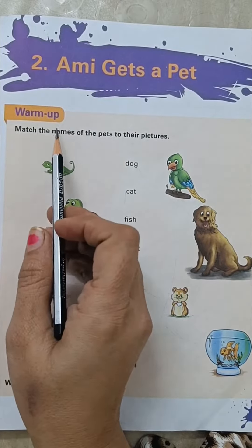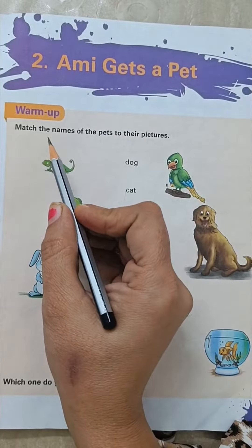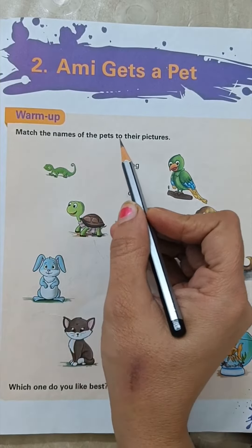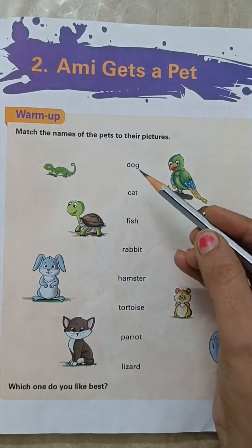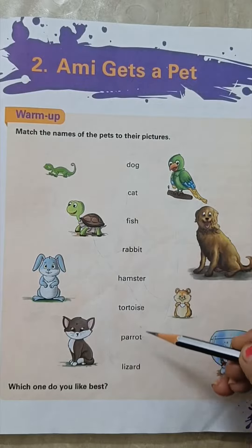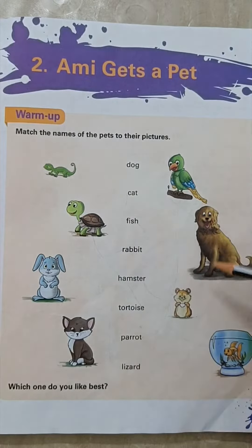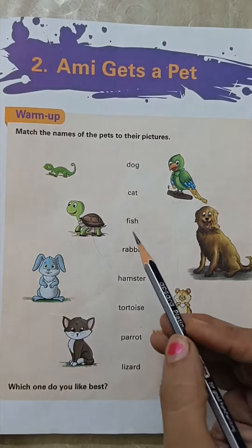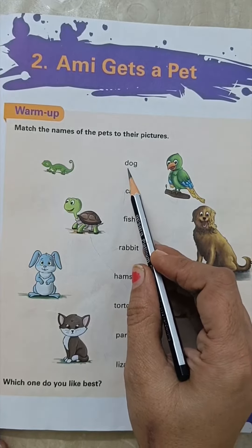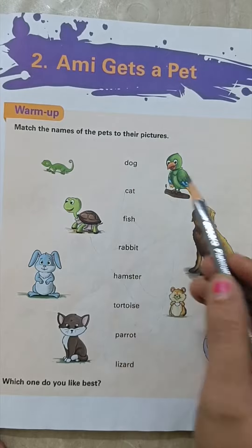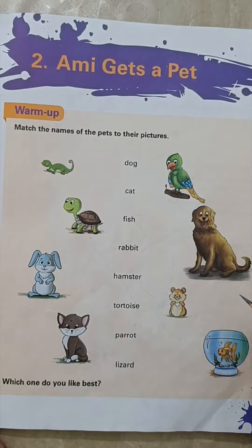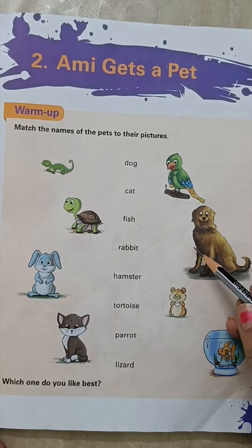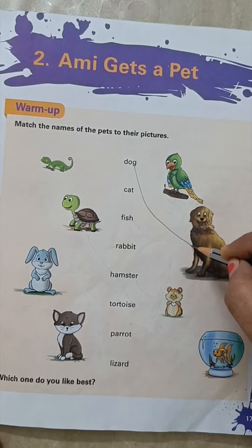Now for a warm-up activity: match the names of the pets to their pictures. We have written the names of pets and their pictures are given, so we have to match the pets with their pictures. First is dog — so where is the dog? Yes, this is a picture of a dog. We have matched the dog with its picture.